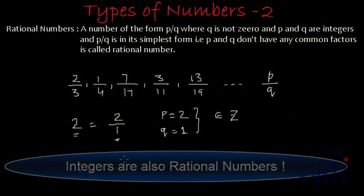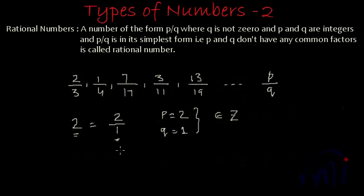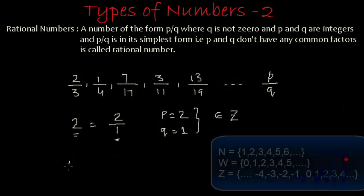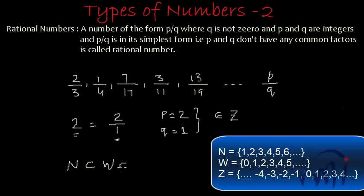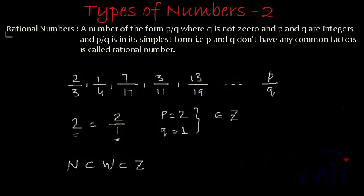That is why we say that all of them are actually a subset of rational numbers. Recalling all earlier learnings about number types: first we had natural numbers — 1, 2, 3, 4 till infinity. Then we had whole numbers, which had one extra element, 0, beyond the natural numbers. Then we had integers, which had 0, all positive natural numbers, and all negative numbers. Now we have rational numbers, represented as Q.